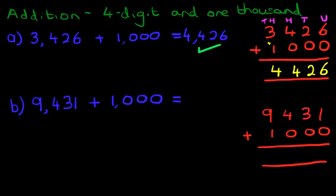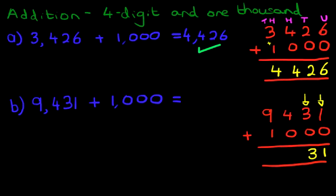Let's put a little arrow so that we know what we're doing. What is one plus zero? Well, that's nice and easy — it's one. Now we go into the tens column: three plus zero is three. Now we do the hundreds column: four plus zero is four.